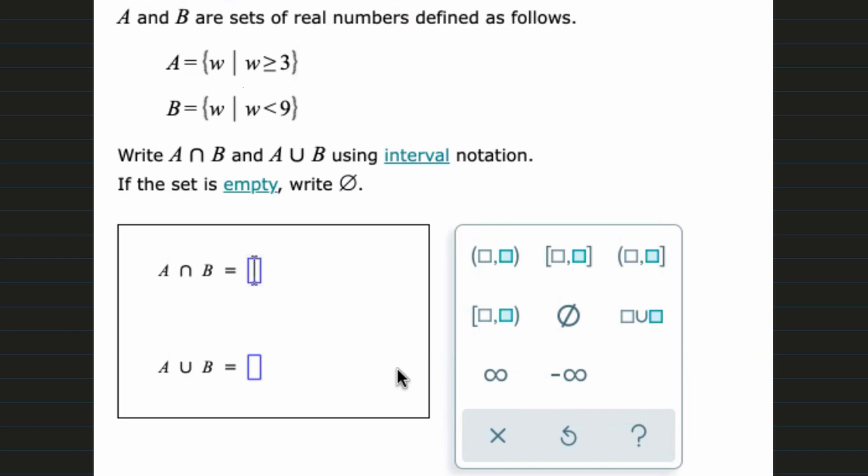For this problem, we have A and B are sets of real numbers defined as follows. So we have A and B right here. We need to write A intersection B and A union B using interval notation. And if our set is empty, which we've done before in a previous problem, we're going to have to write this null symbol.